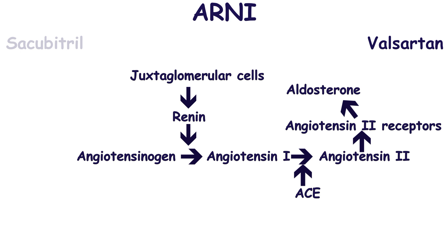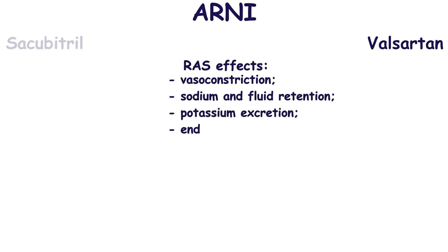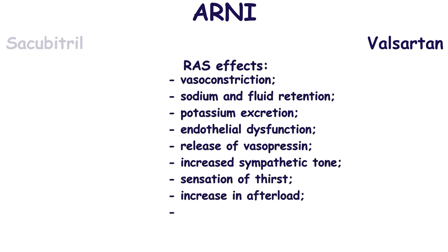Angiotensin-2 is the strongest vasoconstrictive factor. Besides its direct vasoconstrictive effect, it causes aldosterone release in the adrenal cortex, leading to sodium and fluid retention and potassium excretion, and impaired endothelial cell function. Also, angiotensin-2 causes the release of vasopressin, which exhibits reabsorption of water in the kidneys and has vasoconstrictive effects. Vasopressin also enhances the sensation of thirst. Angiotensin-2 stimulates sodium-hydrogen exchangers, increasing sodium reabsorption. All these mechanisms lead to an increase in both blood volume and vascular tone, resulting in elevated blood pressure and increased afterload.